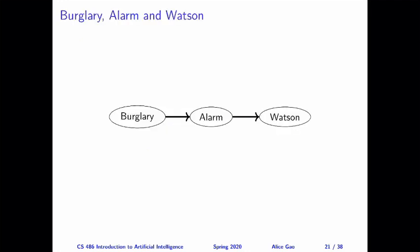In the first example, let's look at the relationships between burglary, alarm, and Watson. Intuitively, their relationship is like a causal chain. If a burglary is happening, this may cause the alarm to go off, which in turn may cause Dr. Watson to call Mr. Holmes.